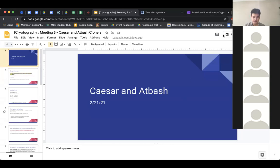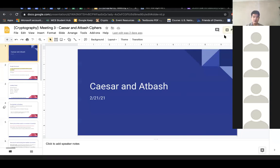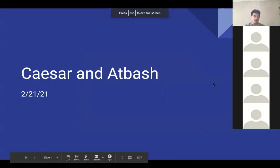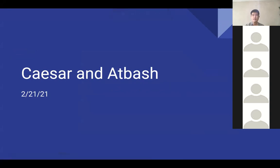Last meeting we did aristocrats — normal ones and ones with errors. We didn't get to the Spanish, but that's fine. This meeting we're doing things called Caesar ciphers and Atbash ciphers. They're both more variations of aristocrats, except unlike aristocrats with errors, there are actually methods you can use with math to solve these.